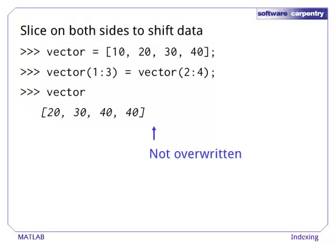Slicing on both sides of a statement gives us a way to shift data along the axes. If vector is a one-dimensional array, then vector 1, 3 selects slots 1, 2, and 3, while vector 2, 4 selects the values in slots 2, 3, and 4. Doing the assignment overwrites the lower three values, but it leaves the uppermost untouched.